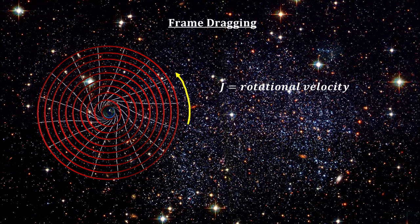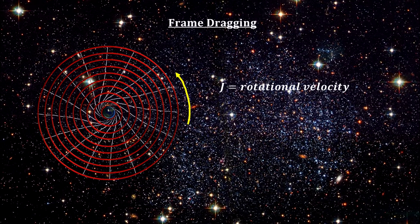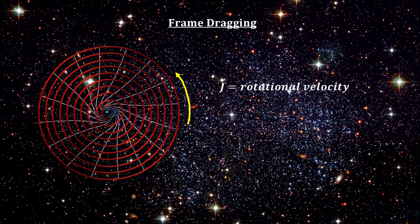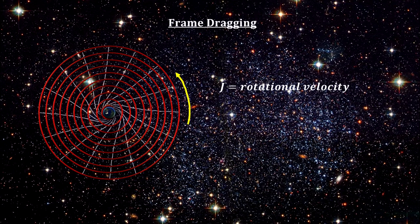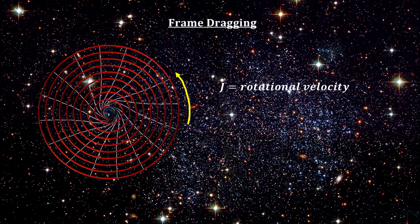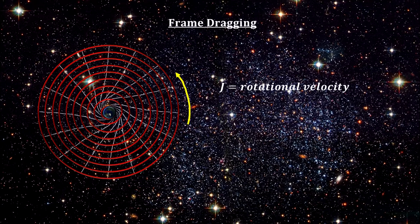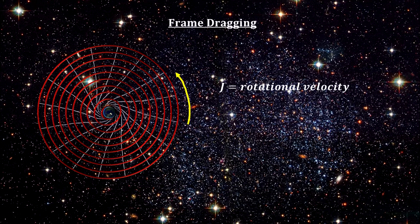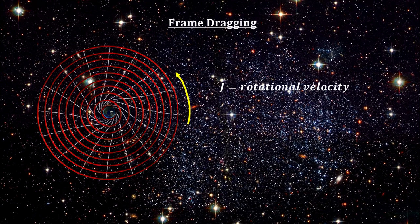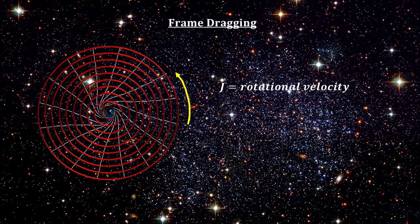They predicted that the rotation of a massive object would distort the space-time metric, making the orbit of a nearby test particle precess like a gyroscope. This does not happen with Newtonian gravity, where the gravitational field of a body depends only on its mass, not on its rotation.